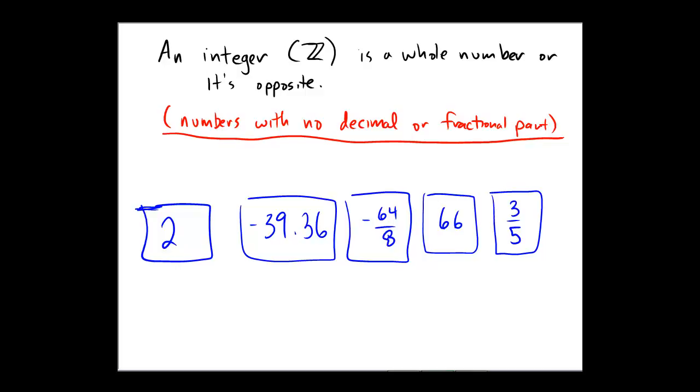Okay, the number 2 is an integer. Notice it has no decimal and no fractional part, so put a check mark there to say yes, integer.